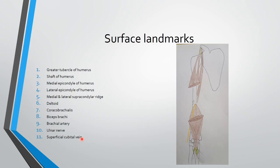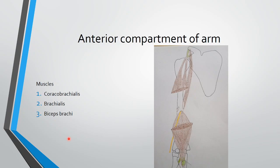The superficial cubital veins in front of the elbow can be used for IV injection as well as other clinical procedures. These veins become prominent when we clench the fist. The anterior compartment of this region is also known as the flexor compartment, containing three muscles: coracobrachialis, brachialis, and bicep brachii. Coracobrachialis is a comparatively weak and small muscle. As the name suggests, it takes origin from the coracoid process and inserts into the brachium — that is why it is called coracobrachialis.